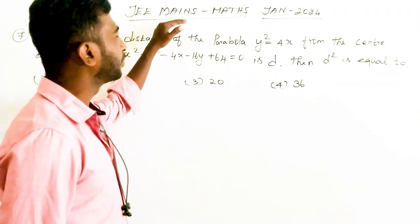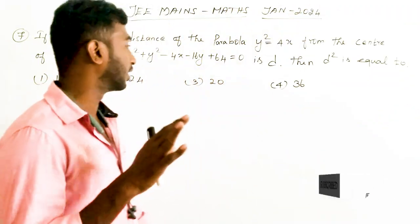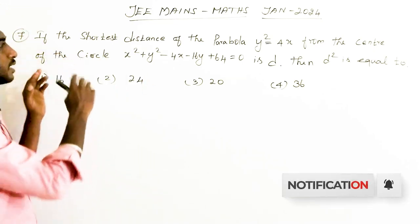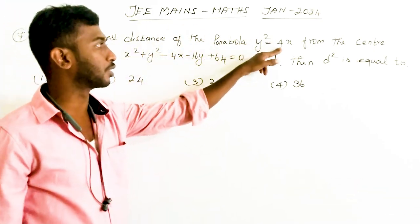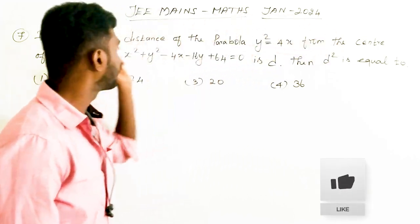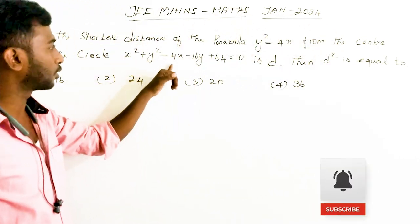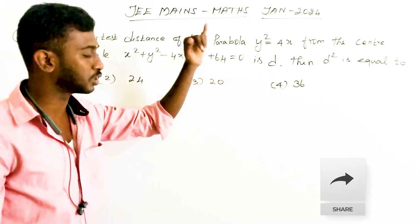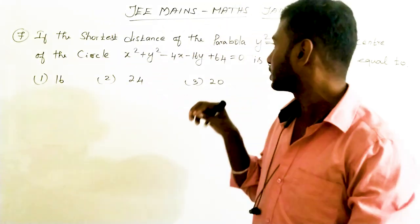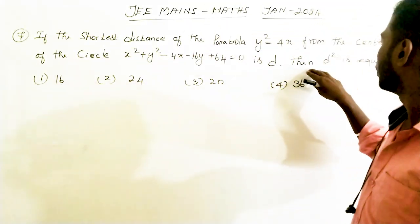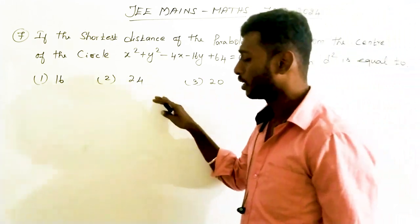Today we are going to see JEE Mains January 2024, question number 7. The question: what is the shortest distance of the parabola y² = 4x from the center of the circle x² + y² - 4x - 16y + 64 = 0? The shortest distance is d, and we are going to find the value of d². Four options are given.